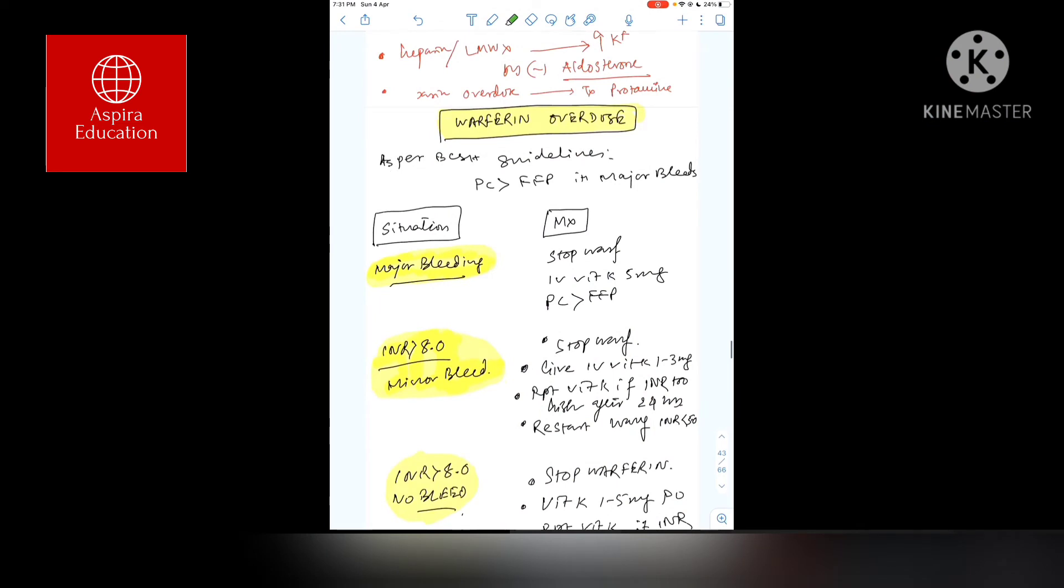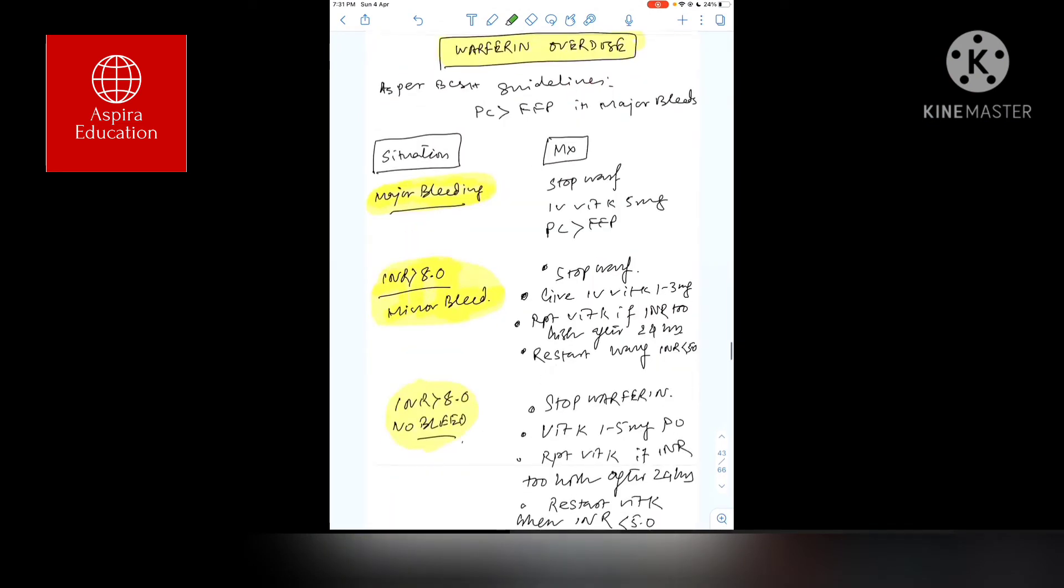We are moving to warfarin. This is very popular in exams - expect at least one question, maybe two from this topic in your upcoming exam. This is the British Society of Hematology guidelines. Remember that prothrombin concentrate is preferred over FFP in case of major bleeding. If that's not available, only then go for FFP.